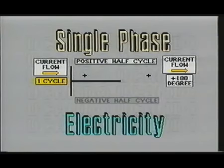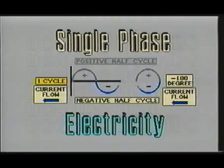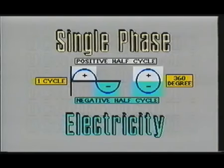We will begin our examination of three-phase electricity by first looking at one complete cycle of AC current. Notice that one cycle of electricity consists of 360 degrees which can be divided into two 180 degree divisions called alternations.